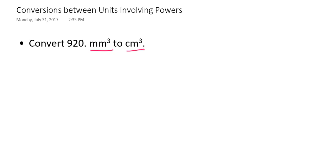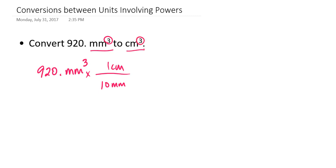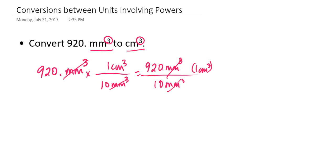For example, suppose that I want to convert 920 cubic millimeters to cubic centimeters. Some students trying this type of conversion for the first time start out by writing their given information — they have 920 cubic millimeters — and they figure they know there are 10 millimeters in every centimeter. They realize the units are cubed, so they just cube the units in the conversion factor and do the math: 920 cubic millimeters divided by 10 cubic millimeters times 1 centimeter cubed, and they end up with 92 cubic centimeters.